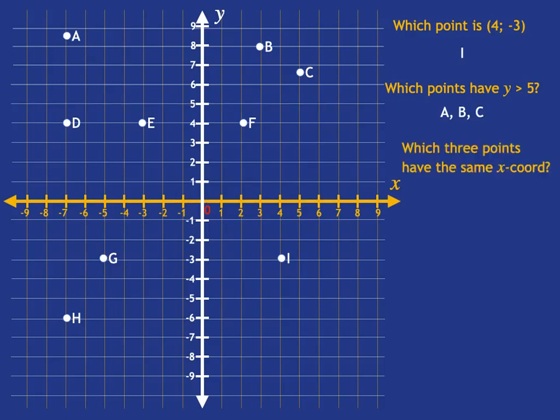Now if we're asked which 3 points have the same x-coordinate, what we're looking for there are points that are exactly the same distance to the left or the right. If you look here, these points A, D and H, all are exactly 7 steps to the left. So those 3 have the same x-coordinate of negative 7.